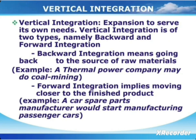Vertical integration means the company adds a new activity to their existing business — adding more functions. For example, a thermal power company may start coal mining; that addition is vertical integration. Vertical integration can be divided into two types: forward and backward. If a wholesaler starts a retailing activity, it is forward integration. If a wholesaler starts procurement activities, it is backward integration. Vertical integration means adding a new, related activity to the business.